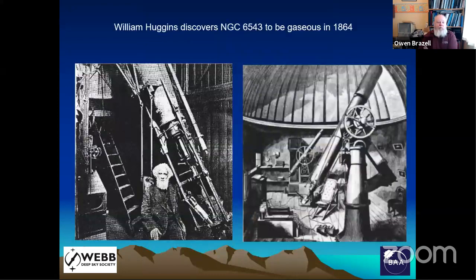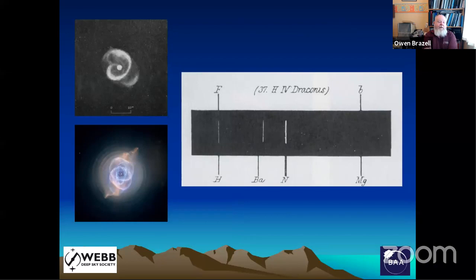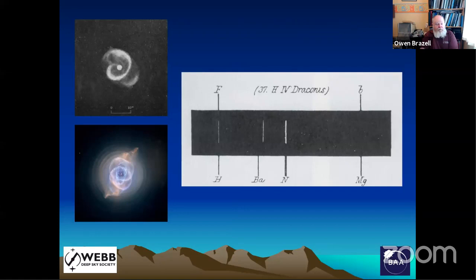The problem of what the nebulae were was not really resolved until William Huggins came along. Huggins was looking at all nebulae with a visual spectroscope — not taking images of the spectra. He turned his telescope plus spectrograph onto NGC 6543, the Cat's Eye Nebula, in 1864. Rather than seeing a continuous spectrum, he was able to show it was primarily a bright-line spectrum, and hence from a glowing gas. This is the spectrum he drew, along with a drawing by Curtis from Lick Publications 18 and the famous Hubble image of the nebula as we see it today. The argument was pretty much settled — these objects are made of gas.